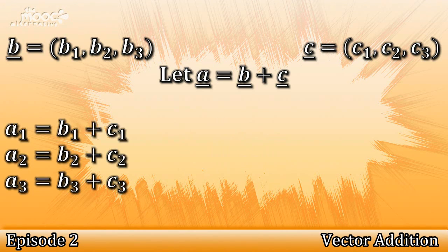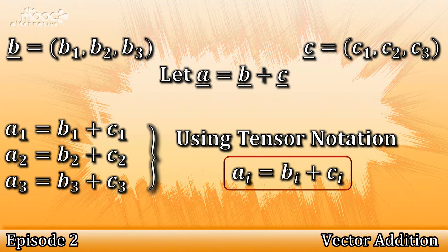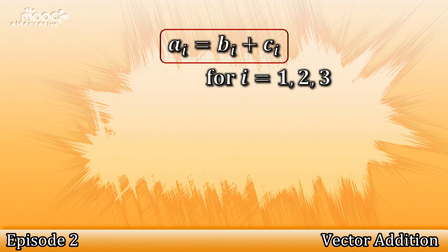Using the index notation we learnt in the previous episode, we can shorten these equations down. a_i = b_i + c_i, for i = 1, 2, or 3. As you can see, it means that for the three equations we have above, all you need to do is replace i with 1, 2, and 3.